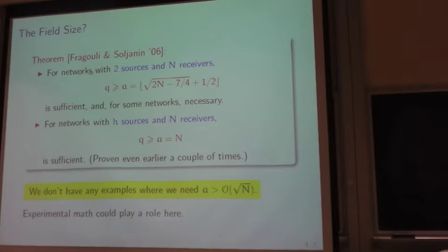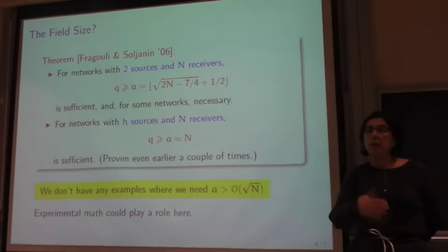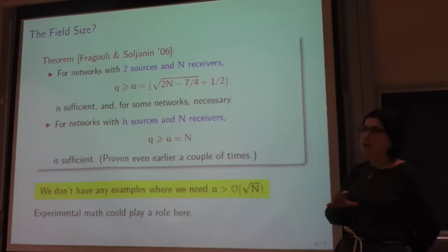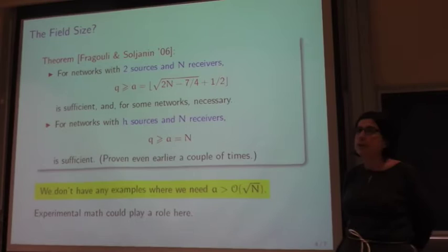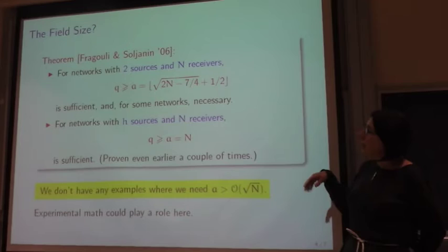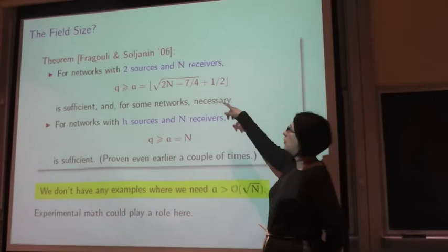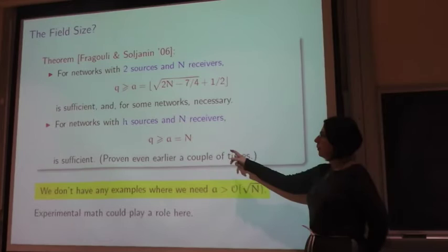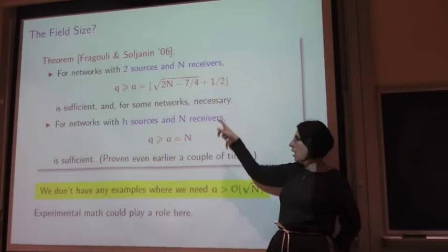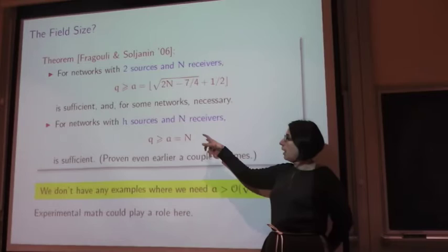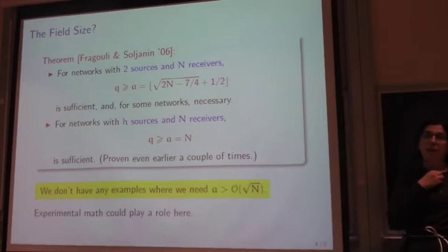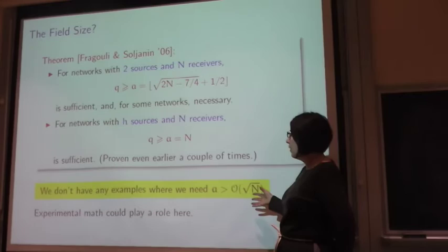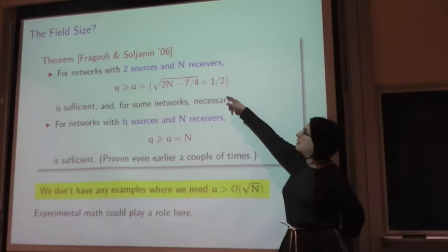So now what do we know about that? So this is connected to network coding problem. This entire problem appeared about 15 years ago but then sometime after that we were able to show, my co-author Christina Fragouli who is now at UCLA, actually she was visiting DIMACS when we were working on that. We know that for networks with two sources, field of size that is sort of order of the square root of 2 times the number of receivers is sufficient. And for networks with H sources, the field of power size N is sufficient. For this we know that there are networks for which this is necessary. For general H sources, we don't know any example where we need more than order of square root of N. And so here is what the experimental math could possibly help.